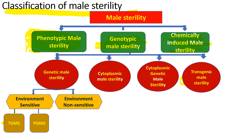Genotypic male sterility is of four types: genetic male sterility, which is dependent on the nucleus; cytoplasmic male sterility, dependent upon the cytoplasm; cytoplasmic genetic male sterility, dependent on both cytoplasm and nucleus; and transgenic male sterility, induced by humans through genetic engineering. Genetic male sterility is further divided into environment sensitive — TGMS (temperature sensitive genetic male sterility) and PGMS (photoperiod sensitive genetic male sterility) — and environment insensitive.